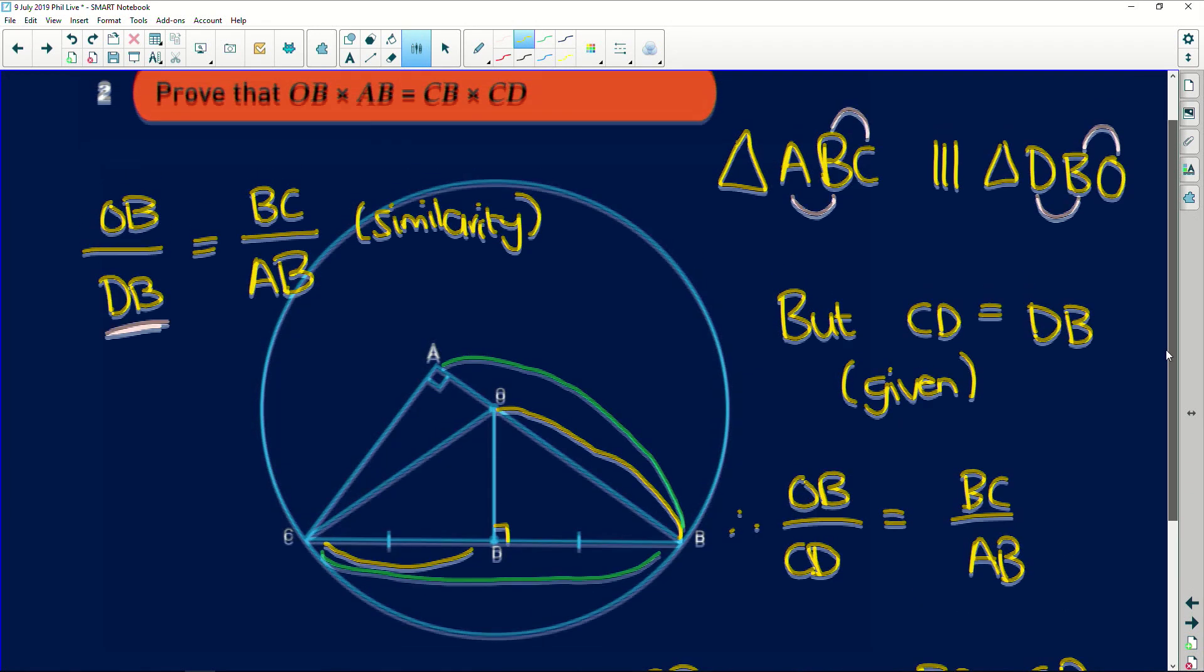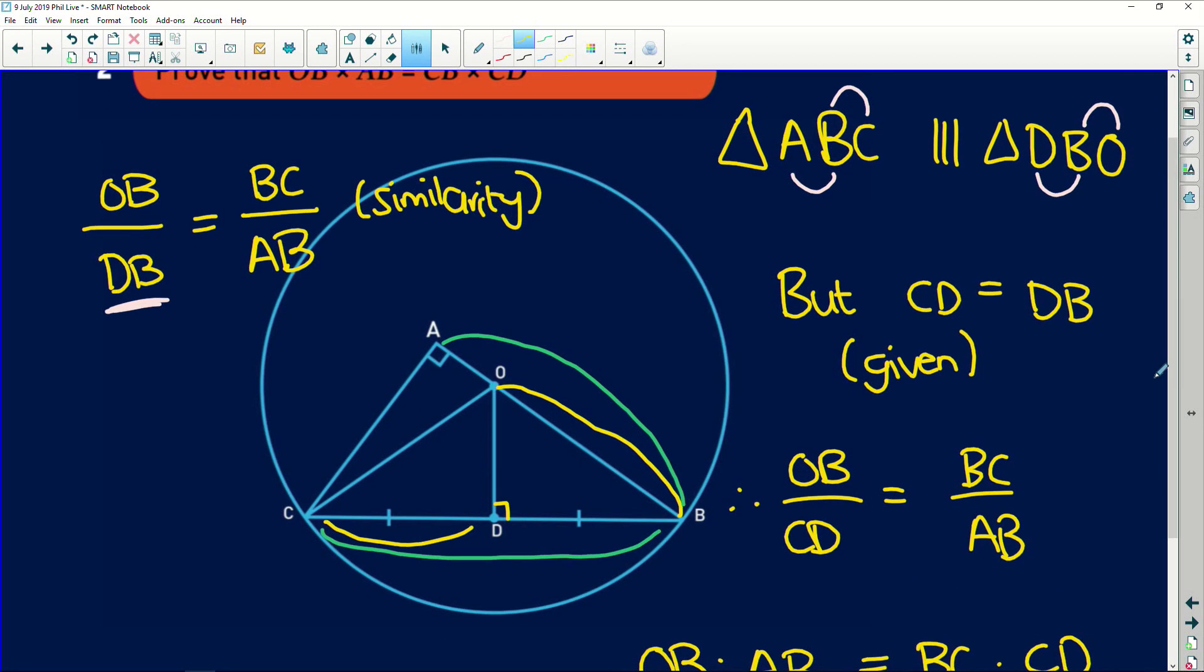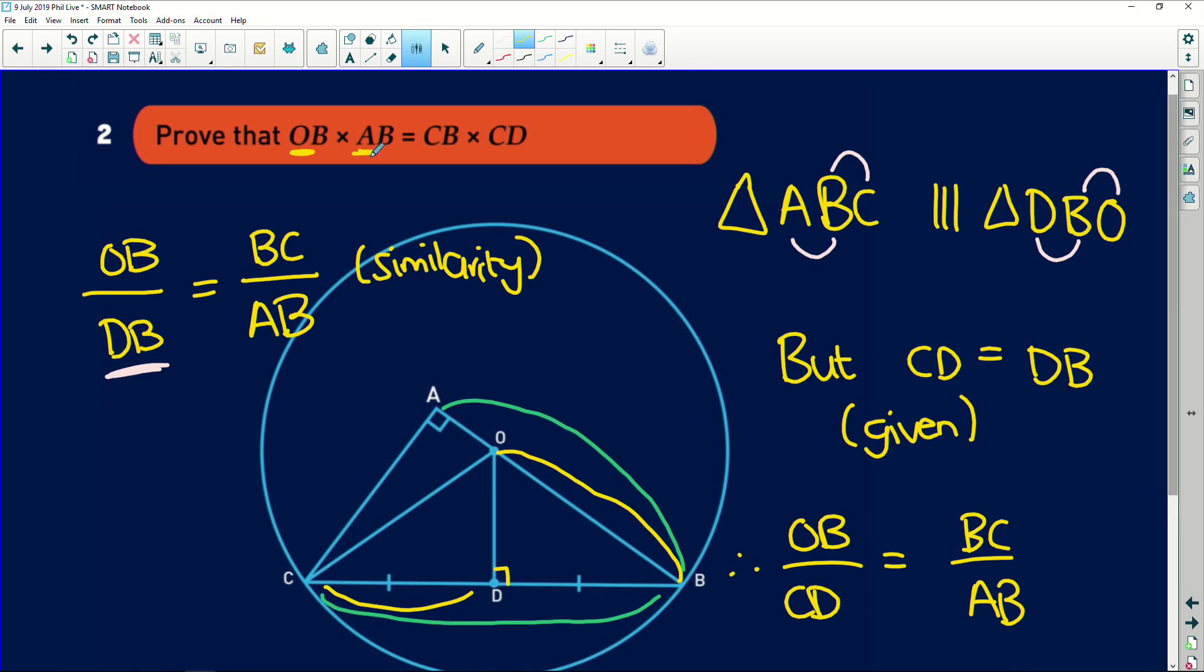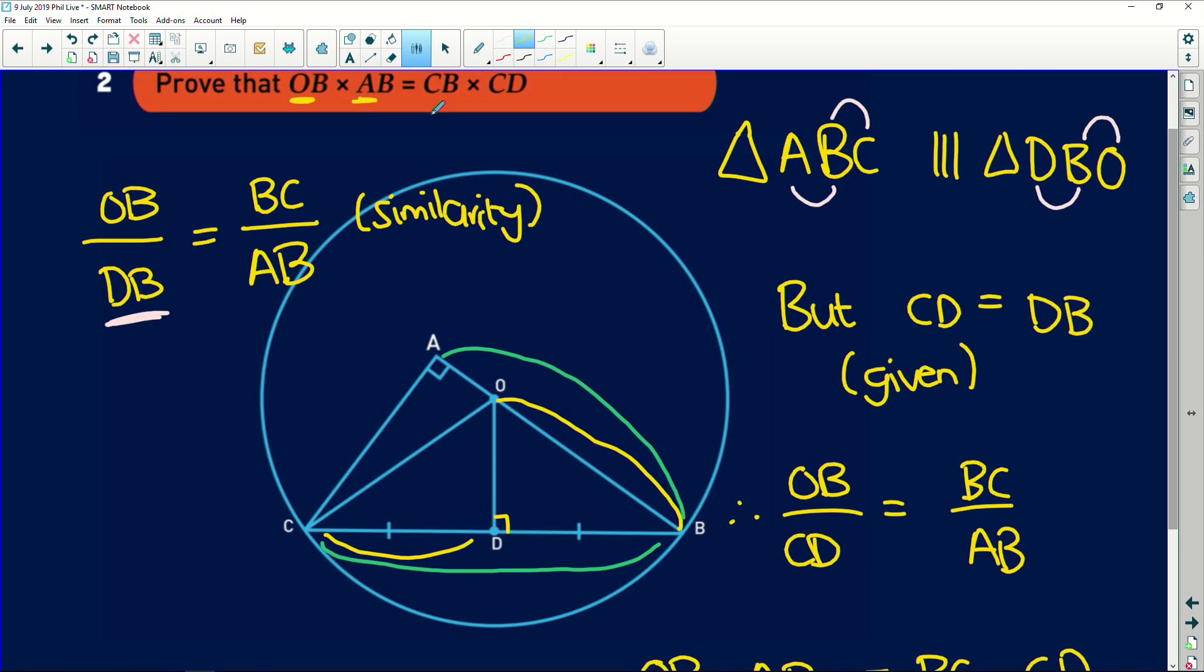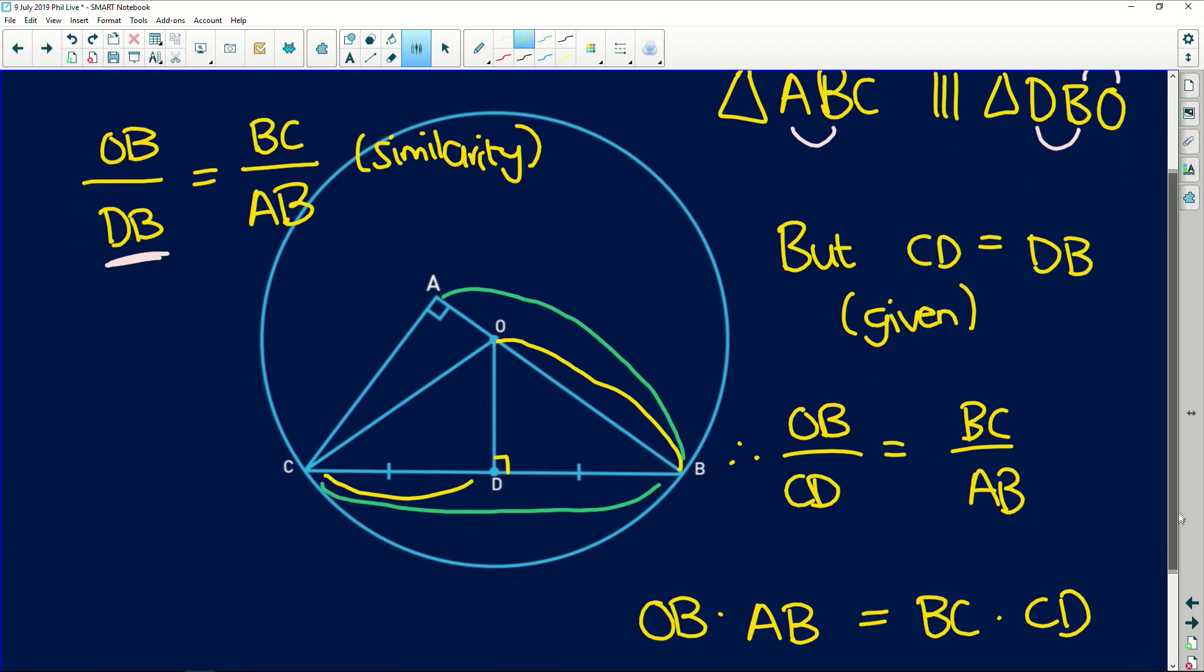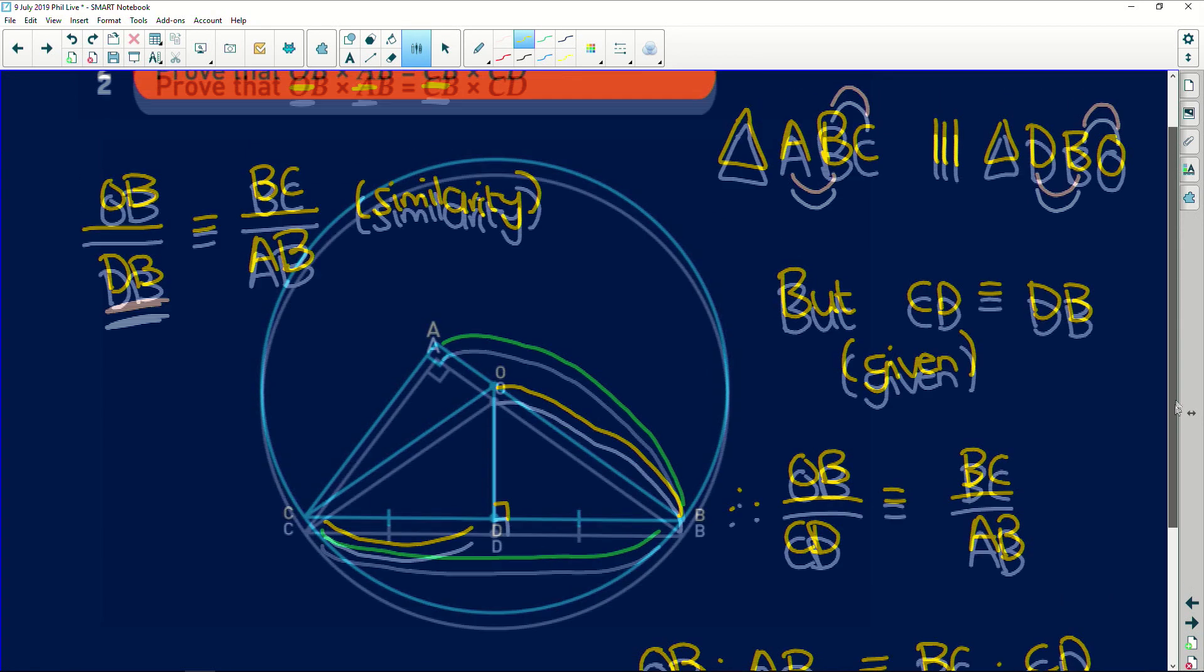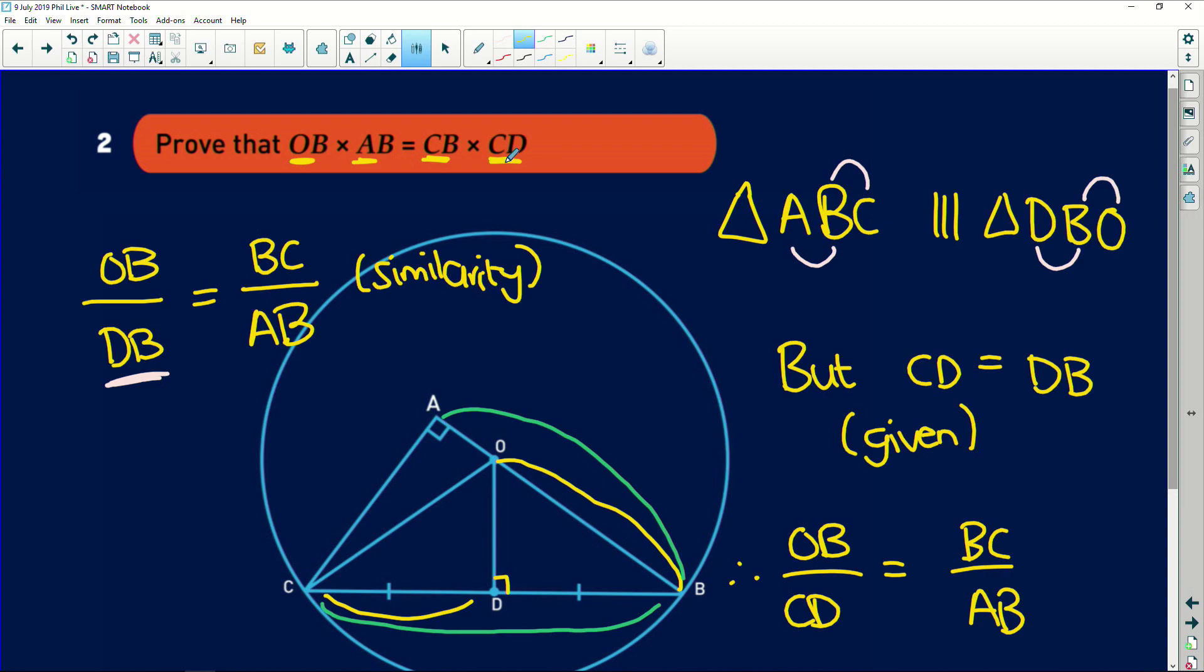And if that is not what we had to prove at the beginning, then I don't know what. We have OB over here, multiplied by AB, which is perfect, is equal to BC or CB, which is that length there, multiplied by CD. Perfect. Perfect proof.